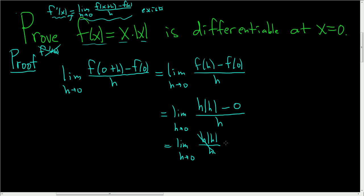These cancel, so this equals the limit as h approaches 0 of |h|. And now this is a continuous function—the absolute value of h is continuous at 0—so we can go ahead and plug in 0. And so this equals 0.